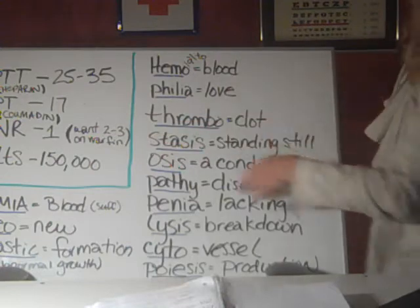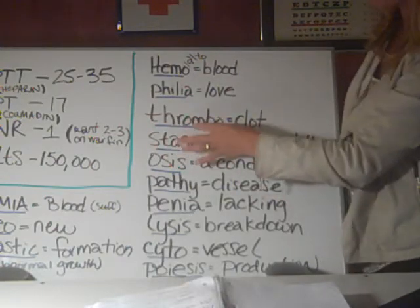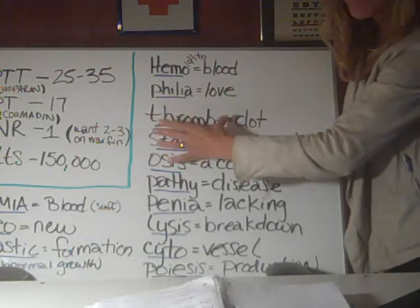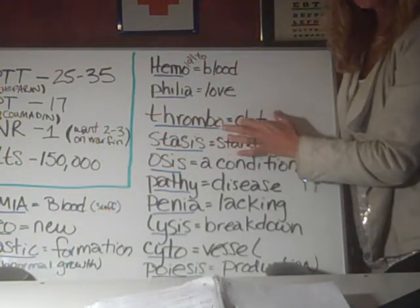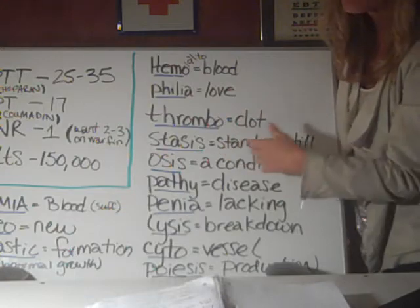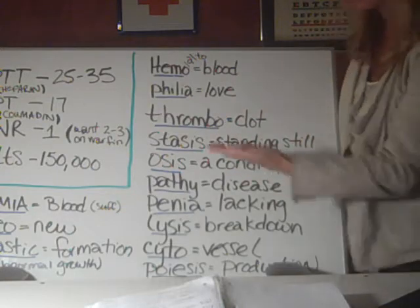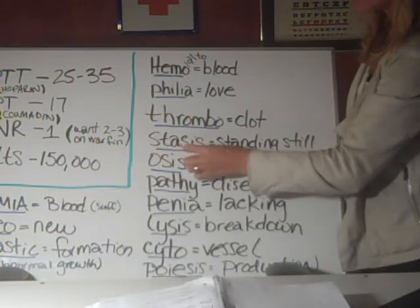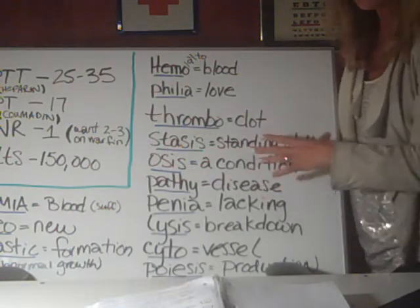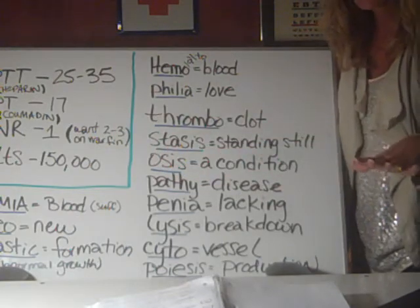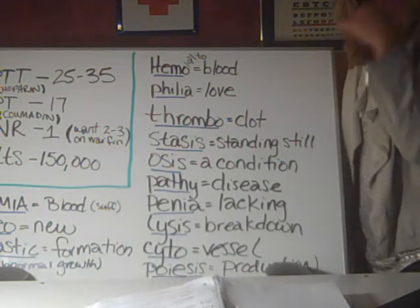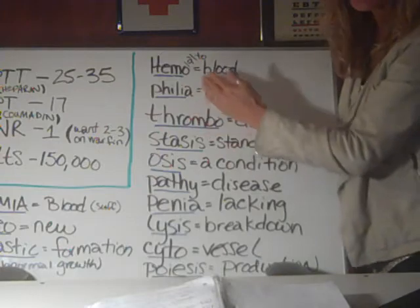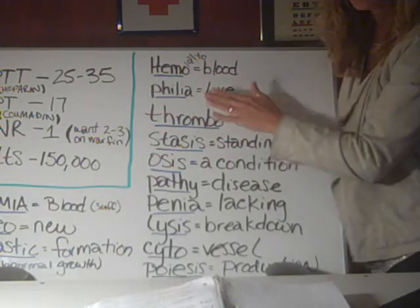Thrombo — T-H-R-O-M-B-O — means clot. So if you see the word thrombo in front of something, that means clot. It can also mean platelets, but platelets lead to clotting. Stasis — S-T-A-S-I-S — just means something is standing still. So a thrombostasis is a clot that's not moving. It's a stable clot.